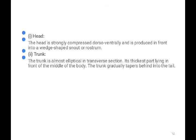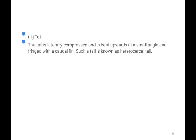The head is strongly compressed ventrally and produced in front into a wedge-shaped snout or rostrum. The trunk is almost elliptical in transverse section; its thickest part lies in front of the middle of the body and gradually tapers behind. The tail is laterally compressed and bent upward. In fish, the tail can be homocercal, heterocercal, or other types. In the case of the shark, the tail is heterocercal.